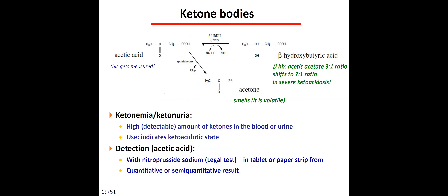Ketone bodies are important in diabetes because abnormal glucose utilization means cells cannot uptake glucose and feel starved. This increases lipolysis, producing free fatty acids and ketone bodies as an alternative energy source. The problem is that ketone bodies have an acidic moiety, disrupting acid-base balance and potentially causing ketoacidosis. Ketone bodies can also be excreted in urine, causing ketonuria.